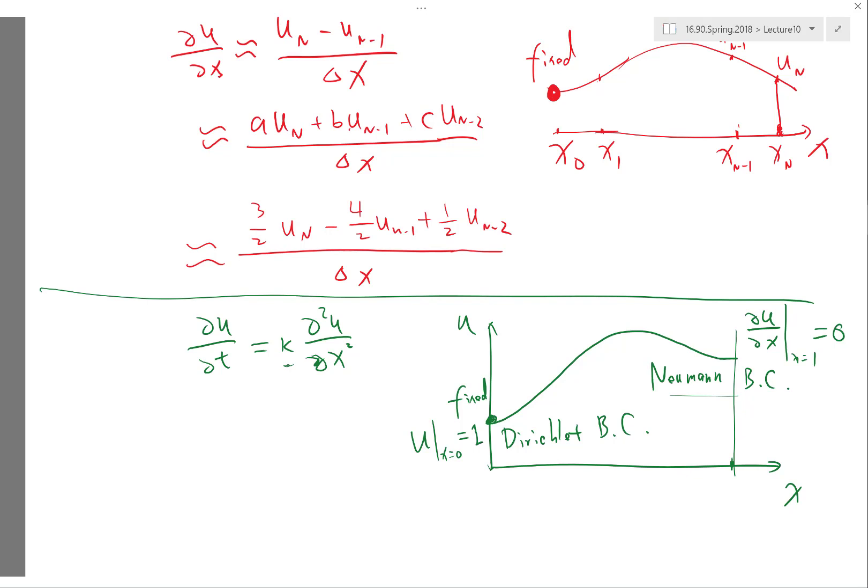In the Navier-Stokes equation, you actually have a mixture of both, right? And analyzing the characteristics only make sense when in regions where this term is much less strong than the advection terms.